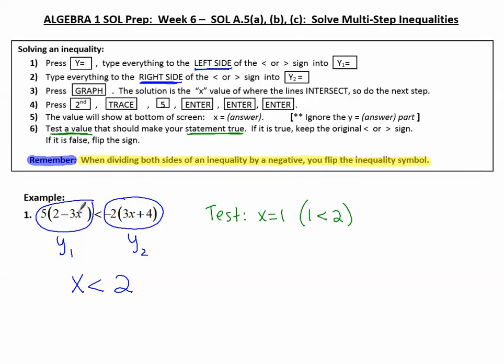So let's test if x equals 1 because 1 is less than 2. I'm going to plug 1 in where I see x in the inequality. 5 times 2 minus 3 times 1, and see if it is less than negative 2 times 3 times 1 plus 4, plugging 1 in where x is. On the left side of the inequality, I get negative 5. On the right side, I get negative 14.